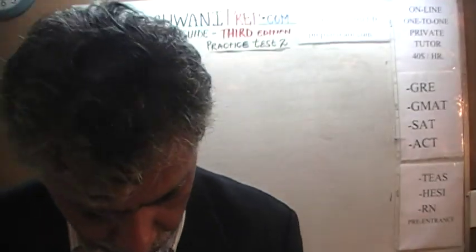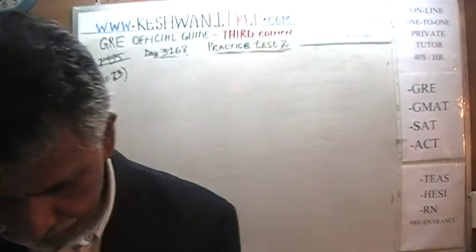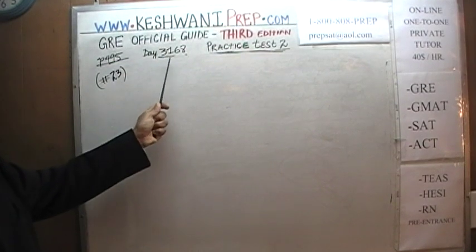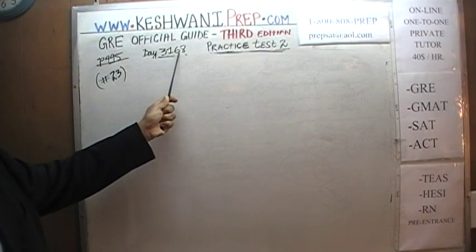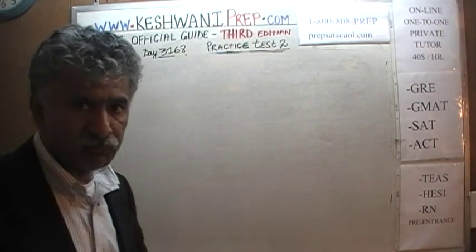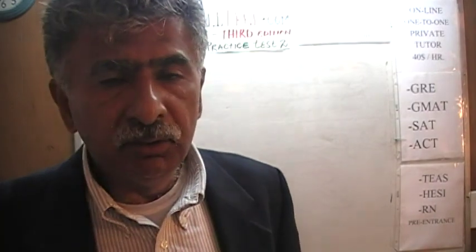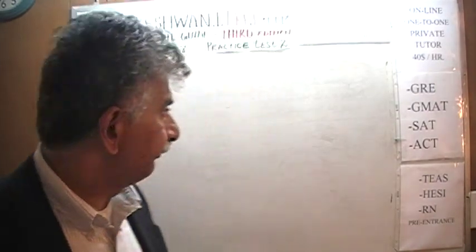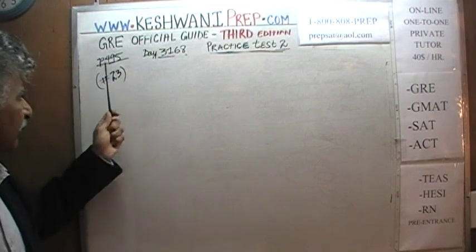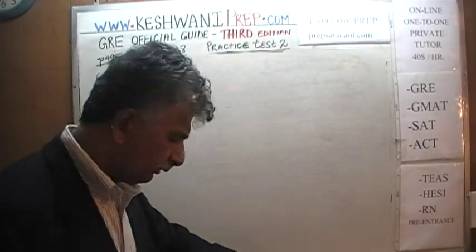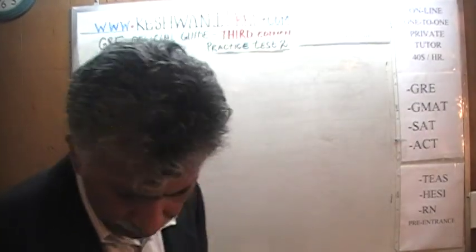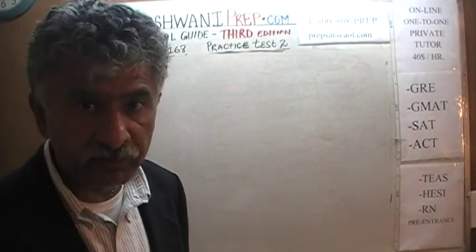Today is our lesson number 168, day 3168. Three signifies that we are in the third edition. We are in the process of solving problems from the two practice tests at the end of the book, on page 495. The very last problem on page 495, number 23, is what we are going to deal with.